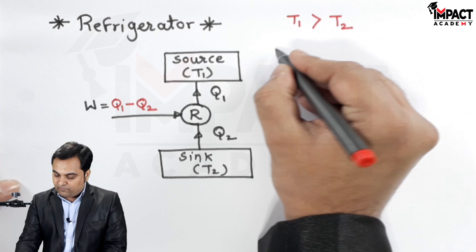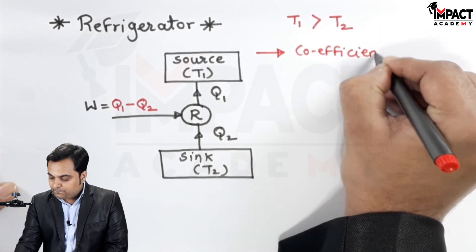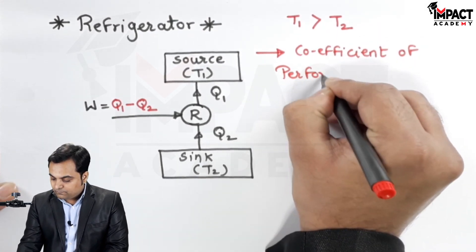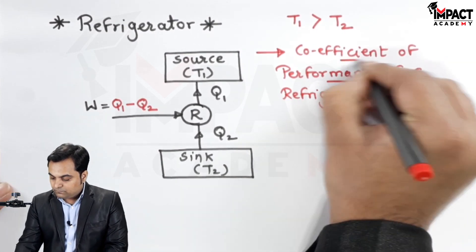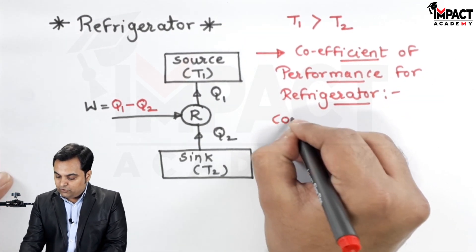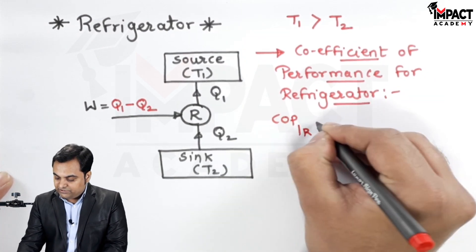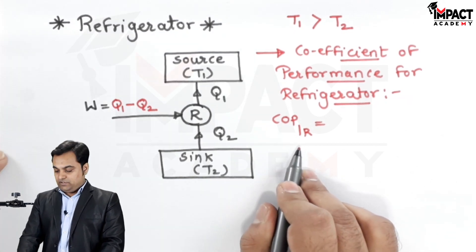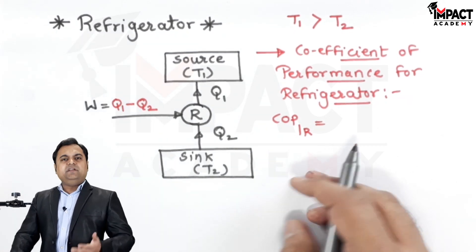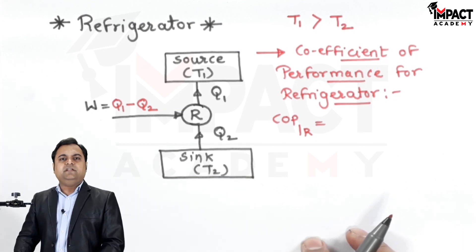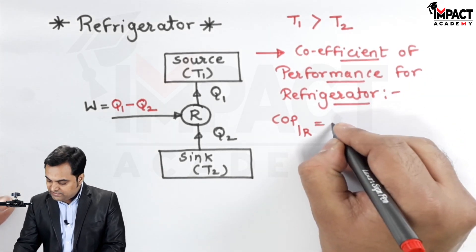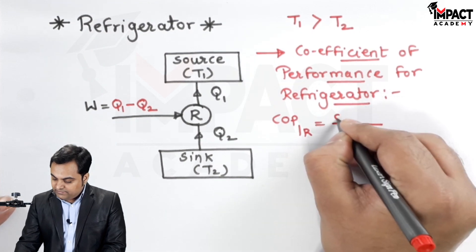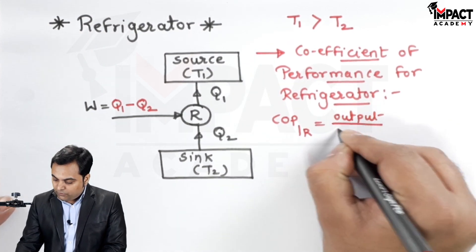COP, that is coefficient of performance. Coefficient of performance for the refrigerator I'll denote it with a suffix R. Now COP is similar to efficiency, the only difference being that COP is just a number whereas efficiency is expressed in the form of percentage. So COP is given by the formula, it is output upon input.